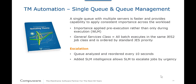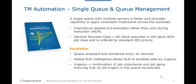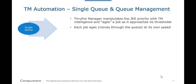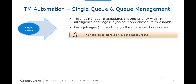Urgency is determined by a combination of job importance and how quickly a job ages through the queue. SLM manipulates the JAS2 priority and ages a job at the speed required to get it selected at the job's target threshold, resulting in jobs aging at their own speed. The higher a job's importance and the closer it gets to its acceptable and/or critical threshold, the more urgent it becomes. The next job to start is always the most urgent job.